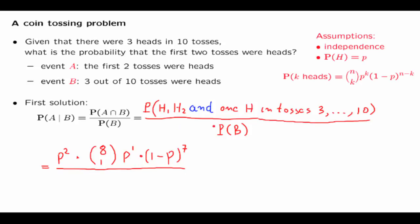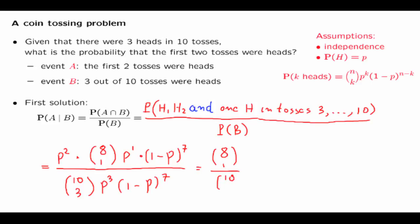The denominator is easier to find. This is the probability that we had three heads in 10 tosses. Using the binomial formula, the probability of three heads in 10 tosses is 10 choose 3, times p to the third, times (1-p) to the seventh power. We notice that terms in the numerator and denominator cancel out, and we obtain 8 choose 1 divided by 10 choose 3. Since 8 choose 1 equals 8, the answer simplifies to 8 divided by 10 choose 3.